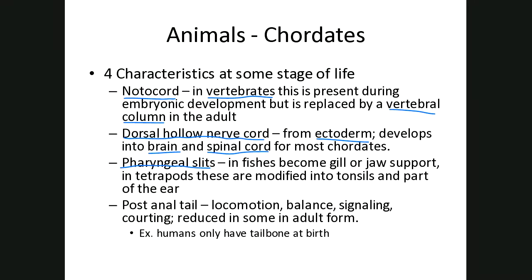For most chordates, pharyngeal slits don't persist through adulthood. In fish they develop into either gill or jaw supports, and in tetrapods like us they're modified into tonsils and parts of the middle and inner ear. The fourth characteristic is the post-anal tail. For many animals this tail serves for locomotion — if they're water-dwelling it may help them swim; if land-dwelling it may be important for balance, signaling, or attracting a mate. In the adult form it may be reduced — humans, for example, just have a little tailbone.